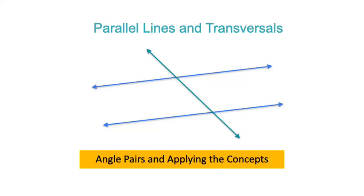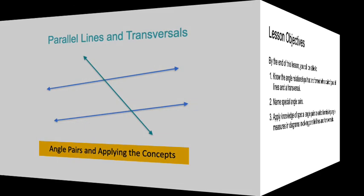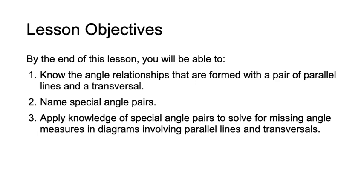Parallel lines and transversals — we will be looking at angle pairs and applying the concepts as we go. By the end of this lesson you will be able to know the angle relationships formed with a pair of parallel lines and a transversal, name special angle pairs, and apply your knowledge to solve for missing angle measures in diagrams involving parallel lines and transversals.